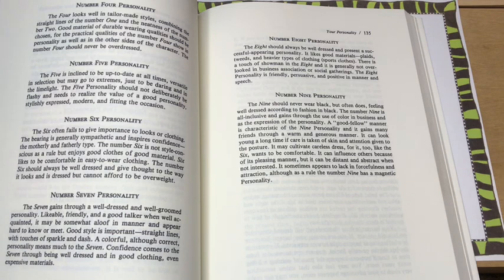And then you have the number 8 personality, should always be well dressed, present a successful appearing personality, likes good materials. Very interested in like the minor details. Is generally not overlooked in business associations or social gatherings. Then we have a 9 personality. This is a number 9, which is what I got.